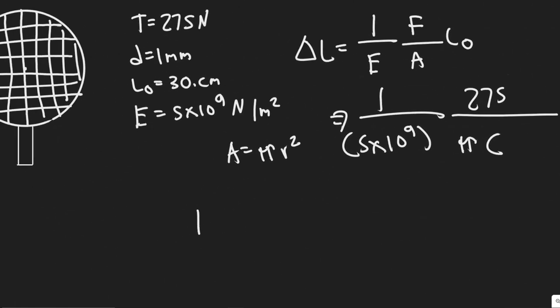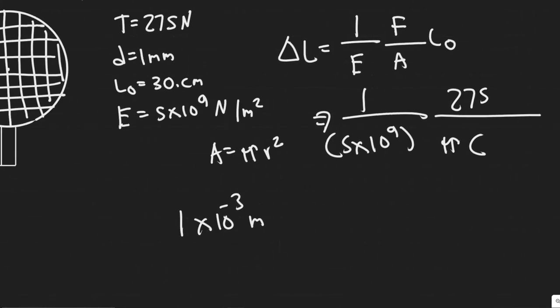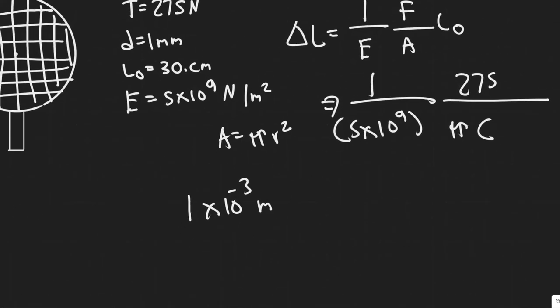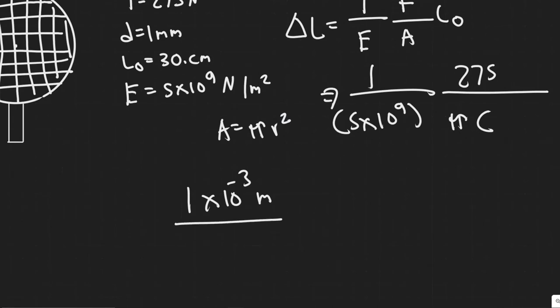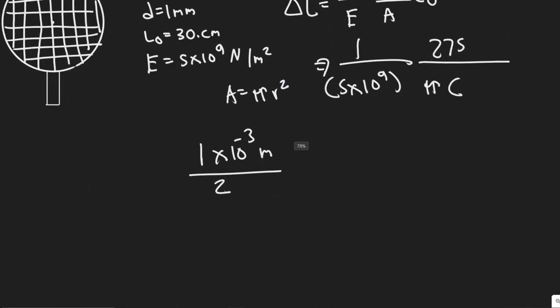So our diameter is 1 times 10 to the minus 3 meters, because milli just means times 10 to the minus 3. We need to make sure we are doing this in meters. And then the radius, obviously, just half of this value. So half of this would just be 0.5 times 10 to the minus 3 meters. So this is your R.